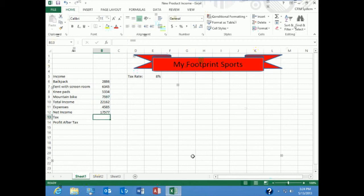Now if I want to figure out my taxes, I get taxed at 8% of my income. So I'm going to write a formula, equal B12 times E5, my tax rate, and there's my taxes. And so my profit after taxes would be my net income minus my taxes, equal net income minus taxes. And so our total profit is $16,170.84.